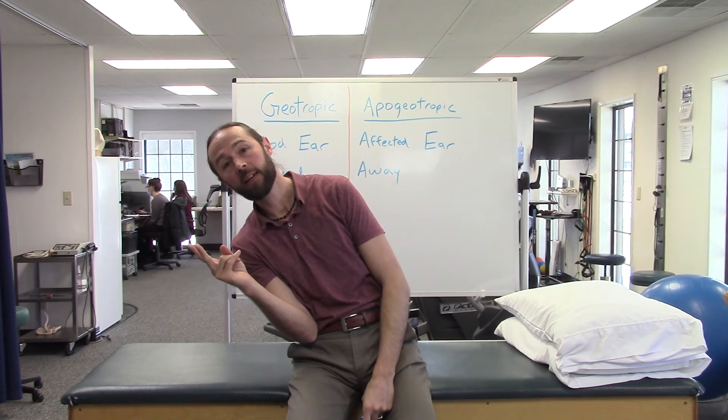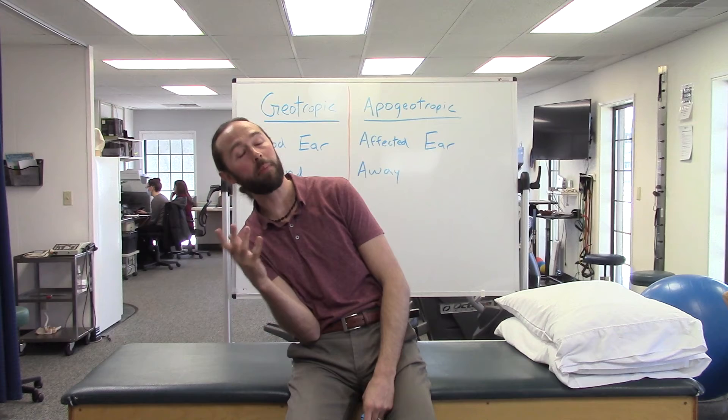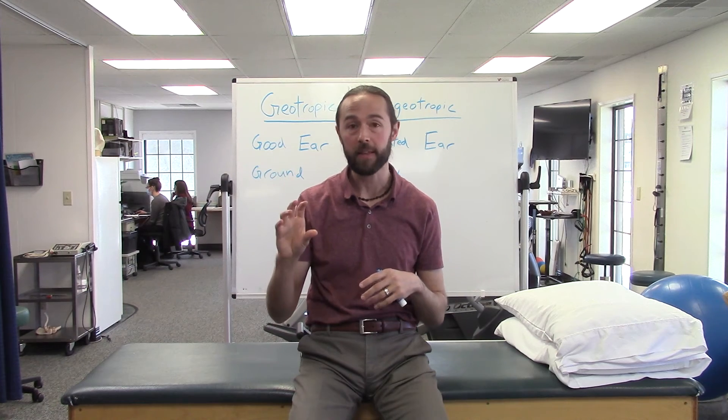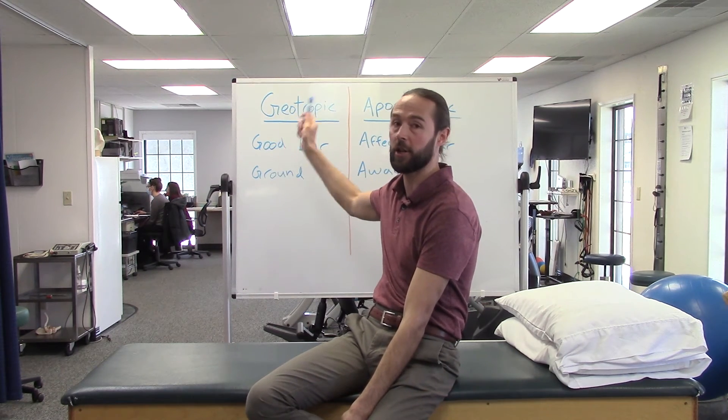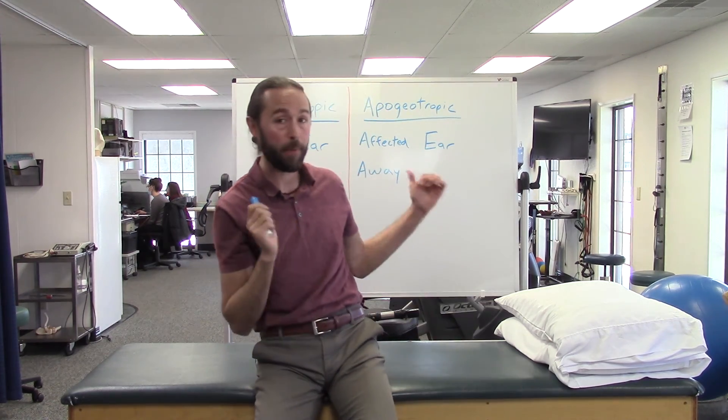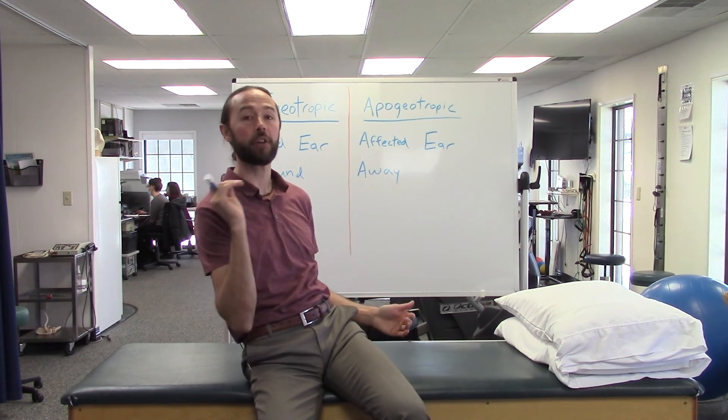So it's the exact opposite. If I have a right inner ear issue but it's apogeotropic, I'm going to go to the right for a minute, then the second step of the Gifani is to look away from the ground for two minutes — the same 45-degree rotation of the head, just the opposite direction. The easy way to remember this: geotropic uses three G's — Geotropic, go to the Good ear, look at the Ground. Apogeotropic: go to the Affected ear, look Away from the ground.